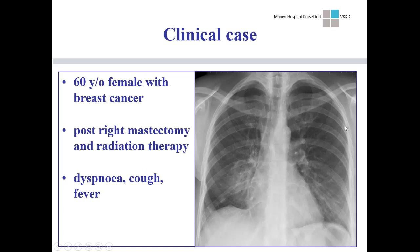I'd like to start with a case — it's actually quite an old case. It's a lady with breast cancer who underwent right mastectomy and radiation therapy to the chest wall, similar to what Professor Ruebe just showed. She developed dyspnea, cough and fever. On a plain chest film there was an area of consolidation, but we couldn't quite understand what was going on. The differential diagnosis was: is it recurrent tumour, infection, or a complication of therapy? As radiologists, if we can't solve the case with a plain film, we go to cross-sectional imaging.